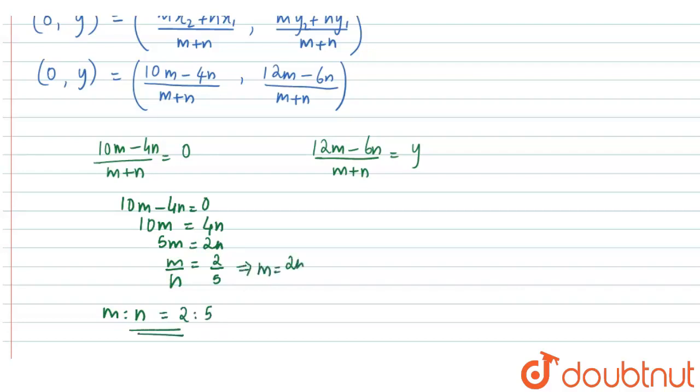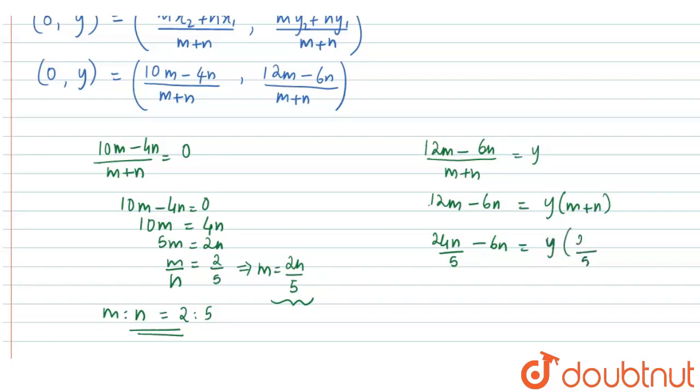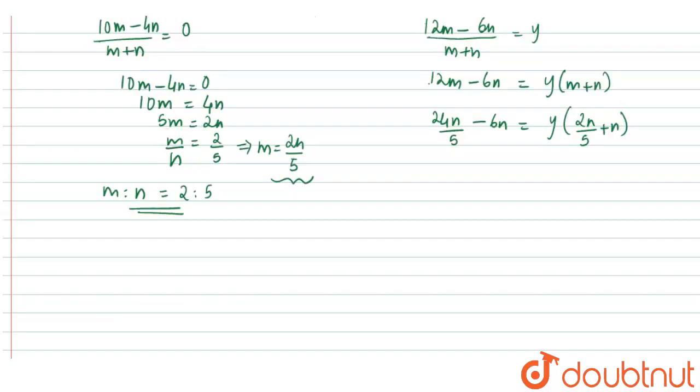So from here, we can also write M as 2N divided by 5. So on this side, we get cross multiplying 12M - 6N is equal to y into (M + N). Now substituting for this value of M, we get 12 into 2N by 5 is 24N by 5 minus 6N.